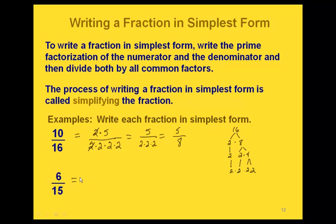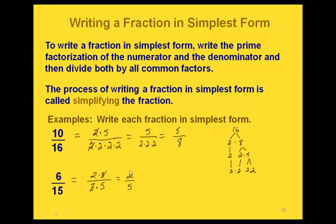Let's look at 6/15. The prime factorization of 6 is 2 times 3, and the prime factorization of 15 is 3 times 5. Looking for common factors, we have 3 as a factor in both numerator and denominator, so we cancel it out. What we have left is 2 over 5, so our equivalent fraction in simplest form is 2/5.